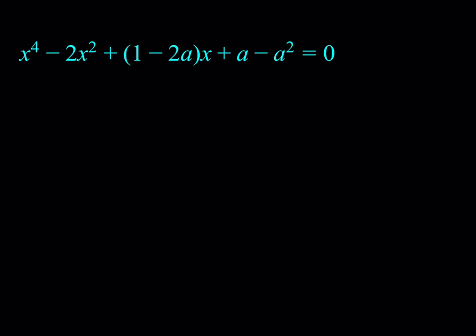We have this quartic equation: x to the fourth power minus 2x squared plus the quantity (1 minus 2a) multiplied by x plus a minus a squared, equal to zero. We're solving for x, but there is another variable, a, which makes this equation more interesting. We can call this an equation with parameters, or a parametric equation. In this case, a is a given number, and our solutions are going to be in terms of a.